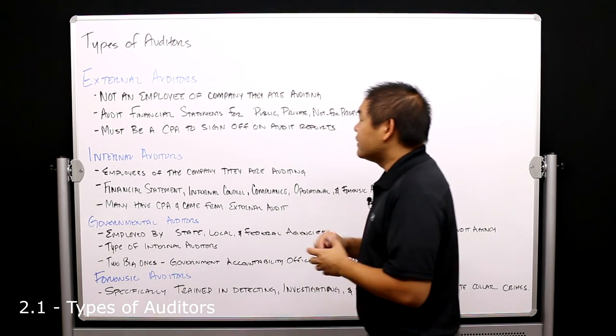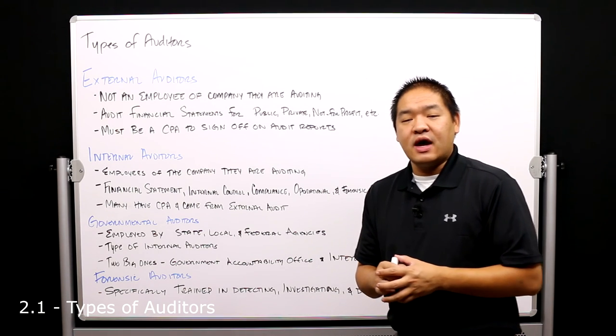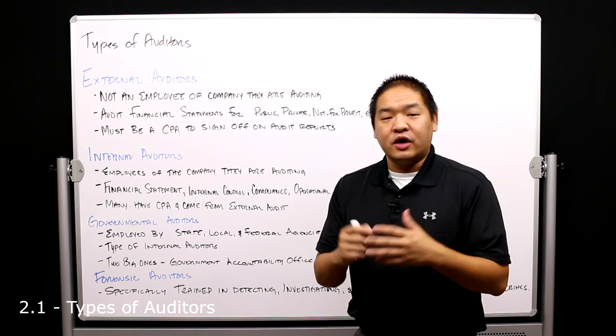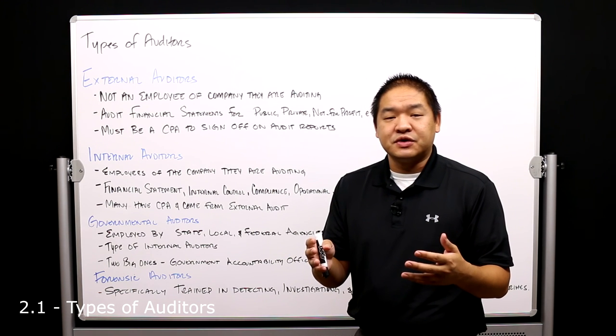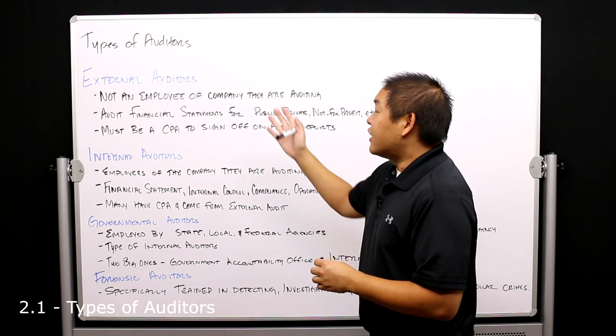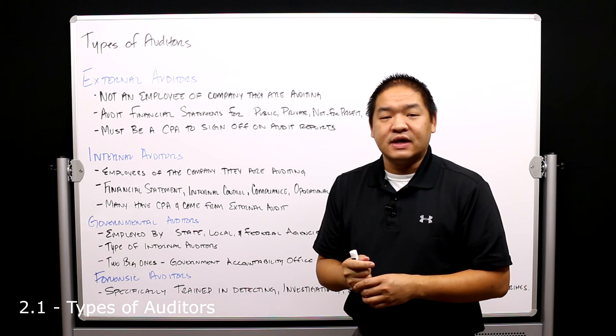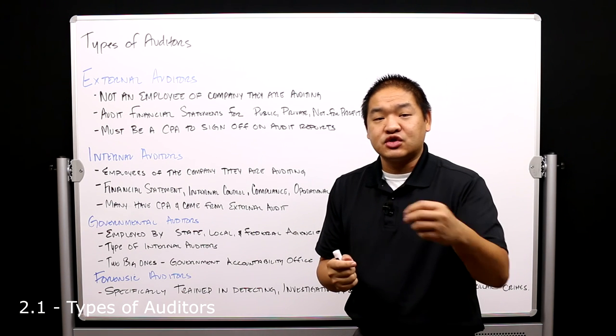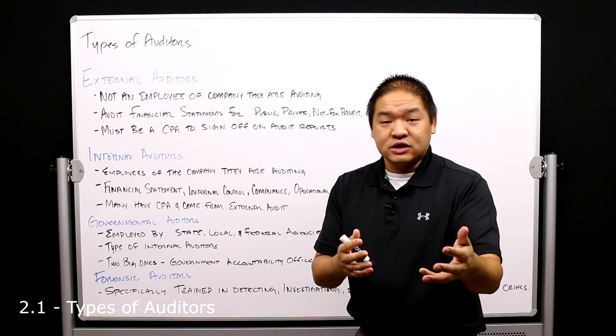Now external auditors are not employees of the company that they're auditing. Typically they are hired by what we call public accounting firms, and these public accounting firms, as part of the services that they offer to their clients, offer external auditors. The reason they're called external auditors is because they are independent or external of the company in which they are auditing the books of.